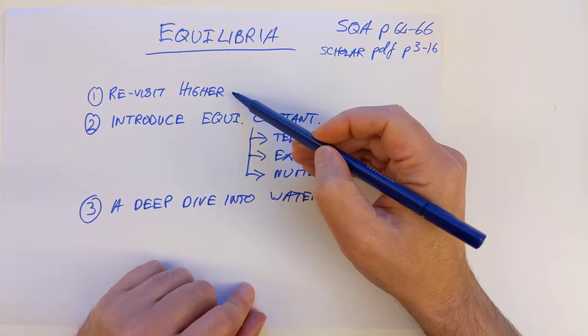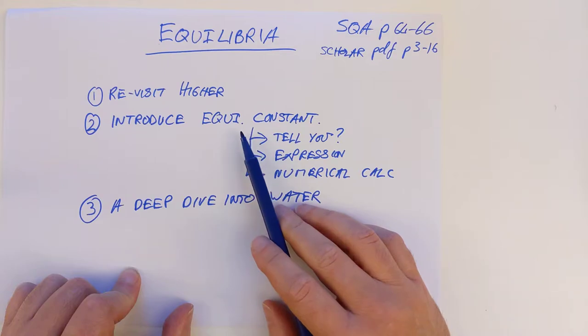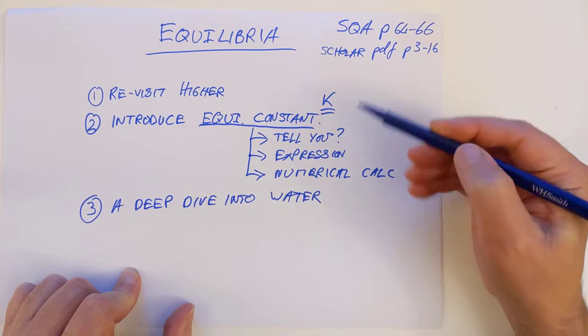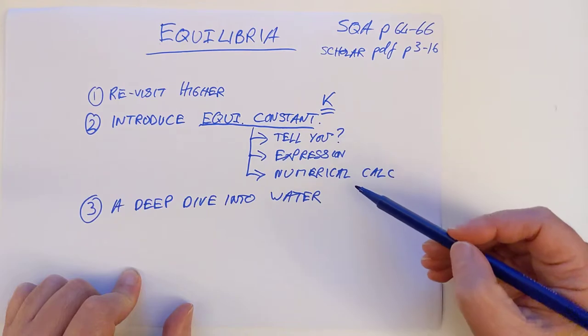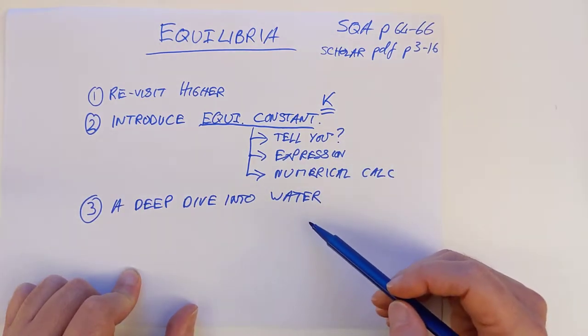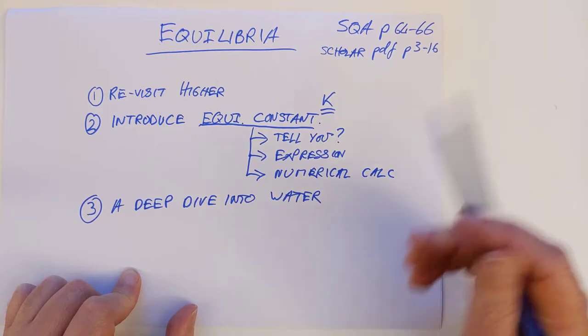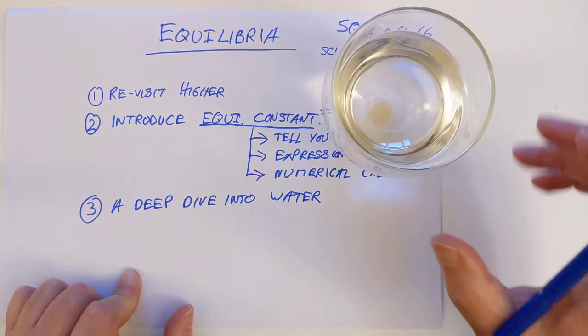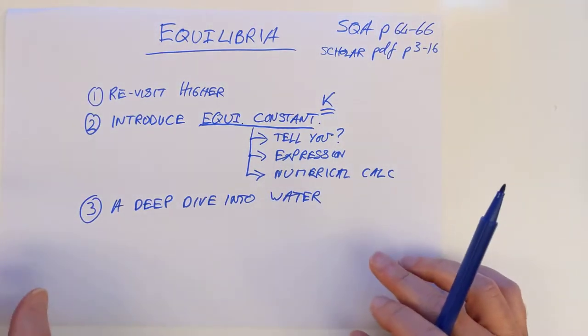These are the three main learning outcomes we're going to tackle in the video today. I would like to briefly revisit higher chemistry in terms of equilibrium, introduce a brand new concept, the equilibrium constant K, and end this video with a closer look at what happens to my glass of water here. We did actually tell you something all the way back in National 5, and it turned out to be true for a change.